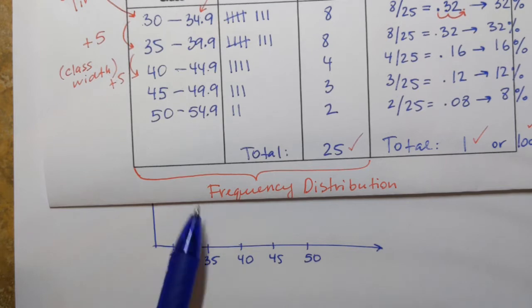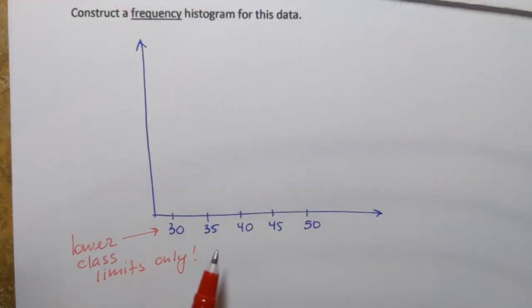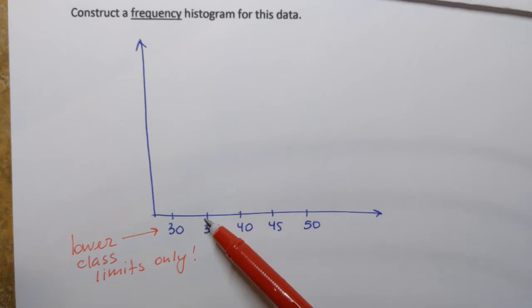Okay, perfect. Now these are the lower class limits. Now why do we only need to place lower class limits on the number line and not the upper class limits? Because as you look at the lower class limits you can easily identify the upper class limits. If this place is labeled as 35 on the number line I don't really need to show that before that I have a number 34.9. I know that anyway.